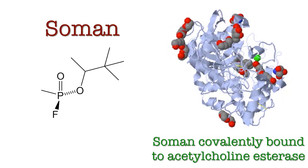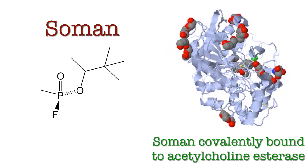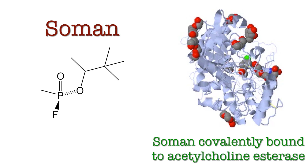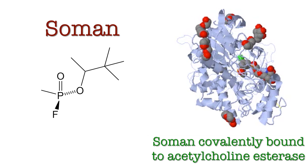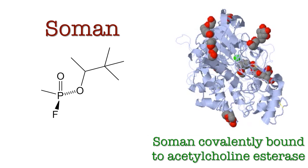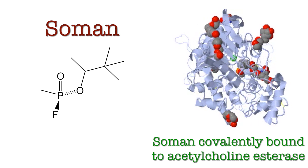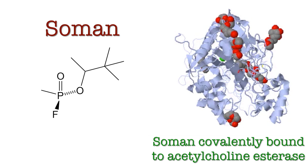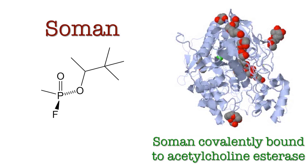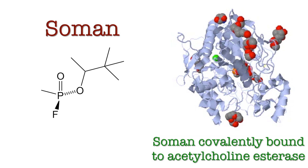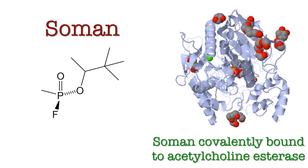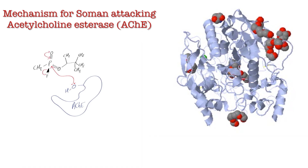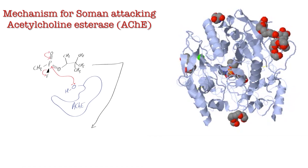The way nerve gases work is they form covalent bonds with acetylcholinesterase — imagine it forms like an ester, but it's a phosphate ester. And that's a really bad thing, because now acetylcholinesterase is completely disabled and can't cleave acetylcholine in the synapse. So now it's just going to accumulate there.